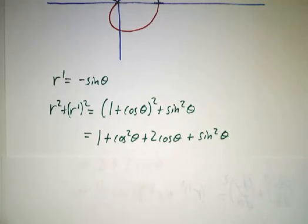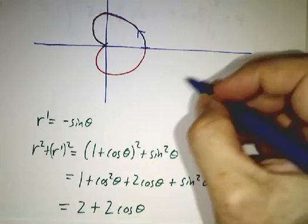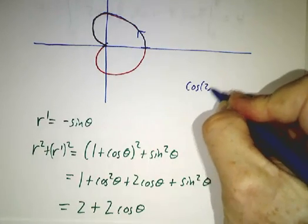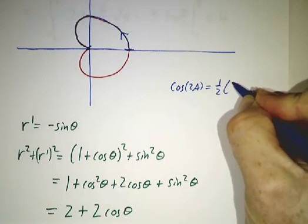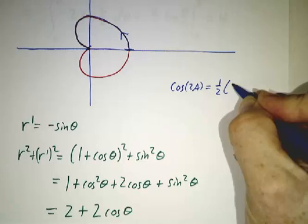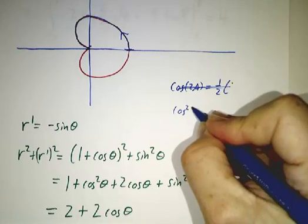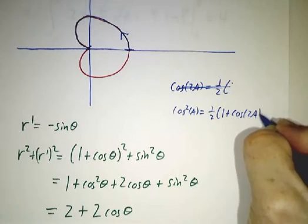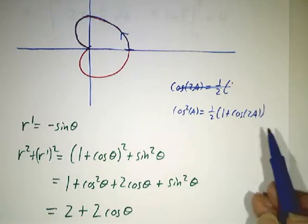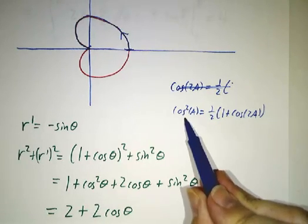cos squared plus sin squared makes 1, so we get 2 plus 2 cos θ. Now here comes the big deal. We know our double angle formula. Our double angle formula says cos squared of anything is 1 half of 1 plus cos of twice that anything. So when you have 1 plus cos of something, you can replace it by twice cos squared of half that angle.